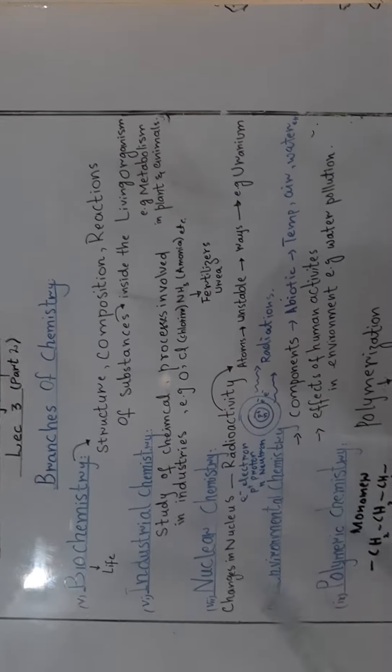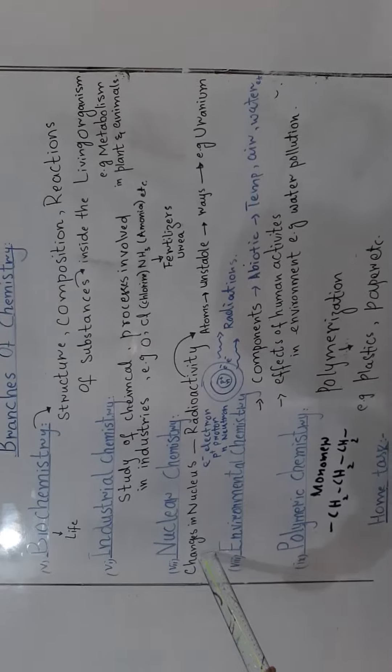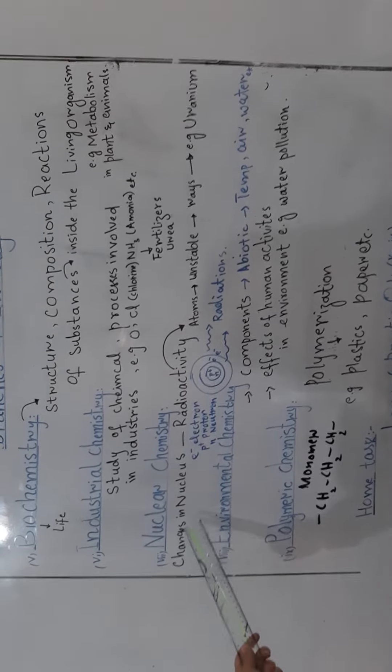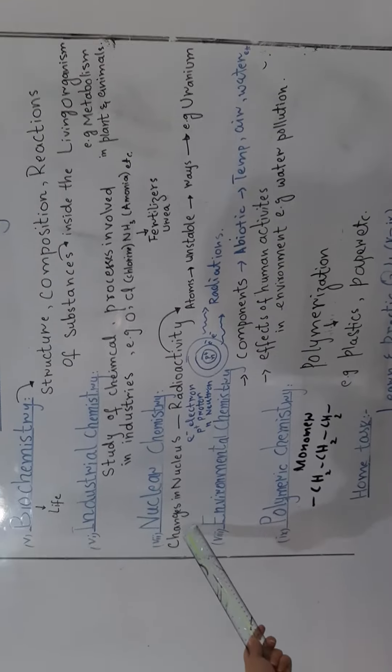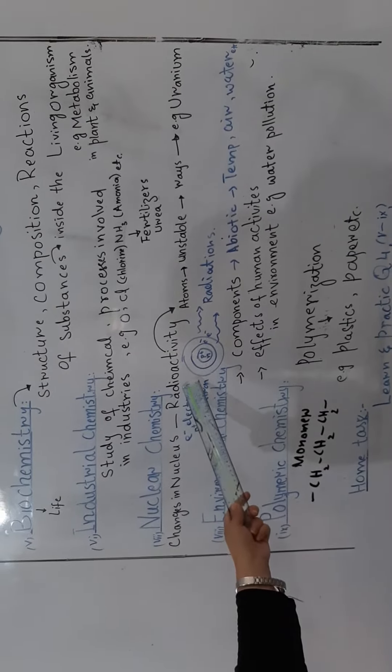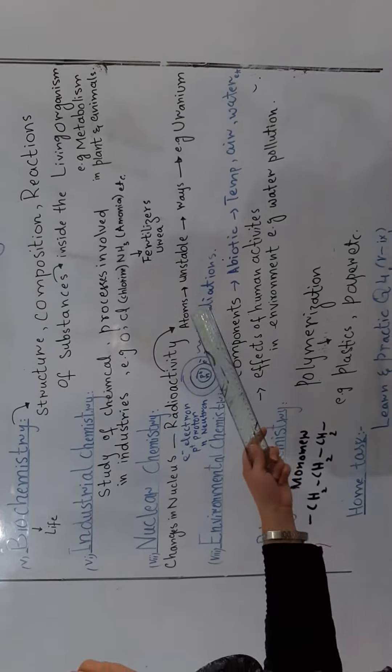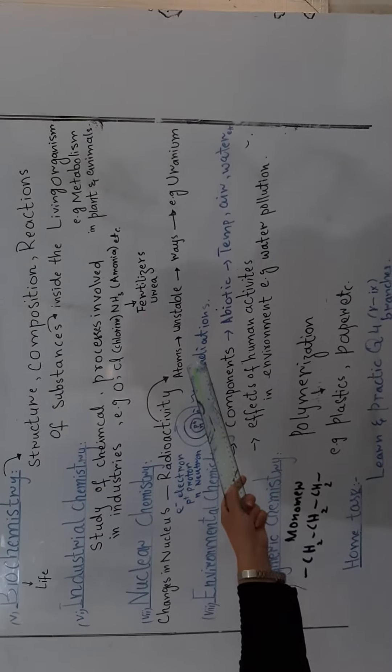Nuclear chemistry. In nuclear chemistry, we study changes involved in the nucleus. What are the main changes which are involved in the nucleus? Usually we study radioactivity. What is radioactivity? We know that an atom is unstable. Sometimes we have a few atoms which are unstable.